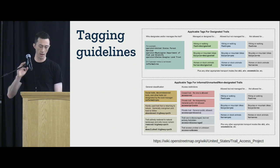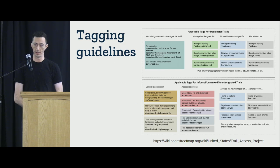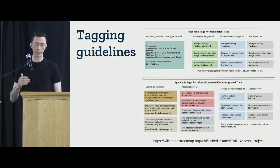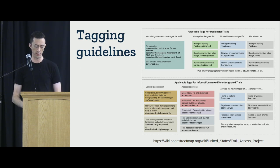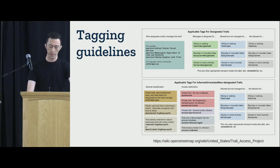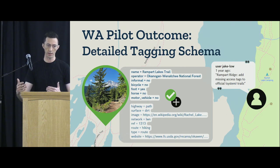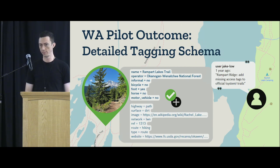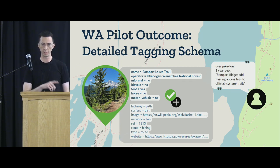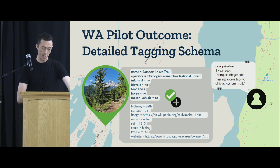The things we identified were: the 'operator' tag to describe what land management agency operates a trail, or if no agency operates it, adding 'informal=yes' to indicate it's a social trail. In addition to that distinction, we wanted to capture what types of uses are allowed — can you hike, bike, bring your horse or dog on the trail? Once we established these tagging guidelines, we identified a bounding box in Washington and attempted to completely tag every trail in it with all those tags. That took a couple of months, while we worked with renderers — specifically Gaia GPS and AllTrails, plus later onX and others.